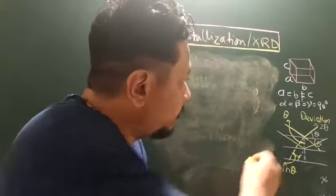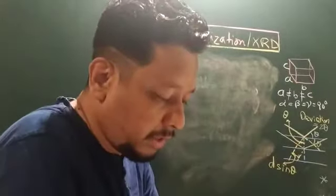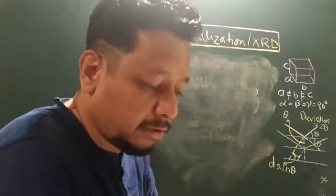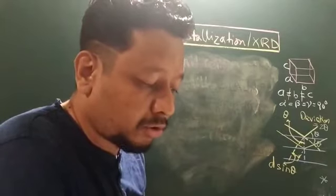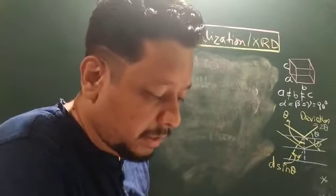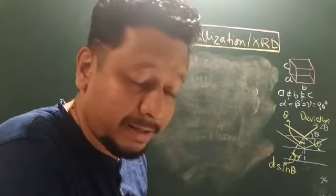Then you have A not equal to B not equal to C, and yet alpha equals beta equals gamma equals 90 degrees. They are known as orthorhombic crystals. Examples: sulfur and barium sulfate.